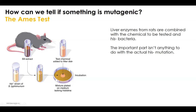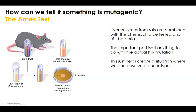The important part is that the His- bacteria give us something to observe. In a normal situation, our His- strain grown on media without histidine won't be able to grow because they have no histidine, they cannot make histidine, and there is no histidine. So they should not grow. Again, this is not the discovery — it just creates a situation that gives us an opportunity to view mutations when they happen.